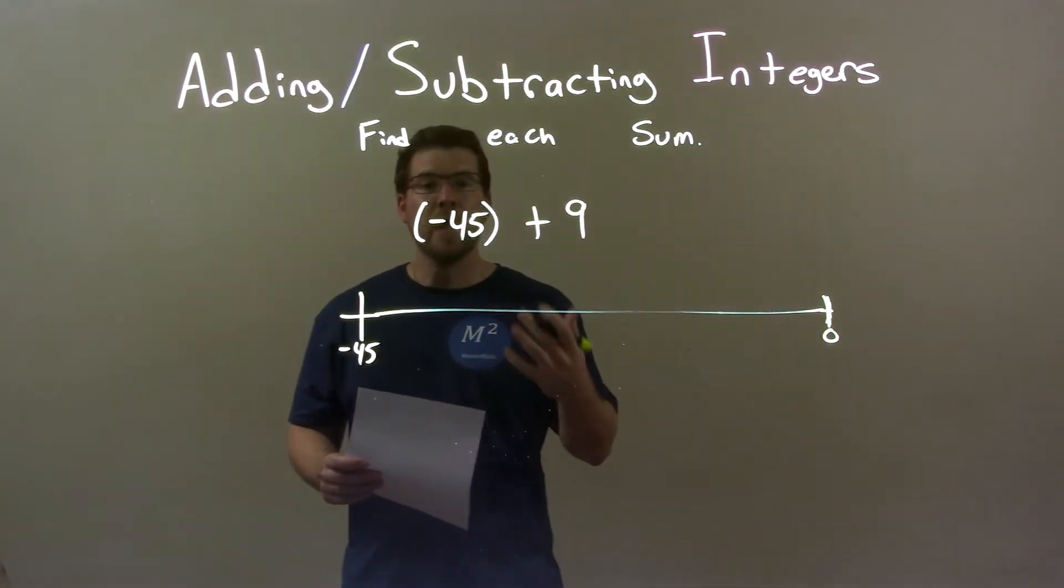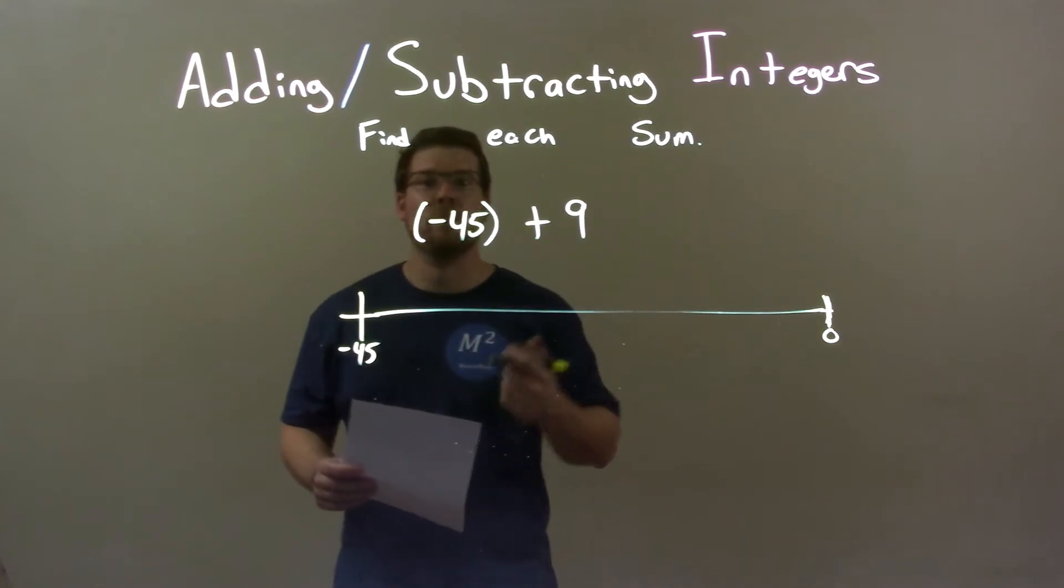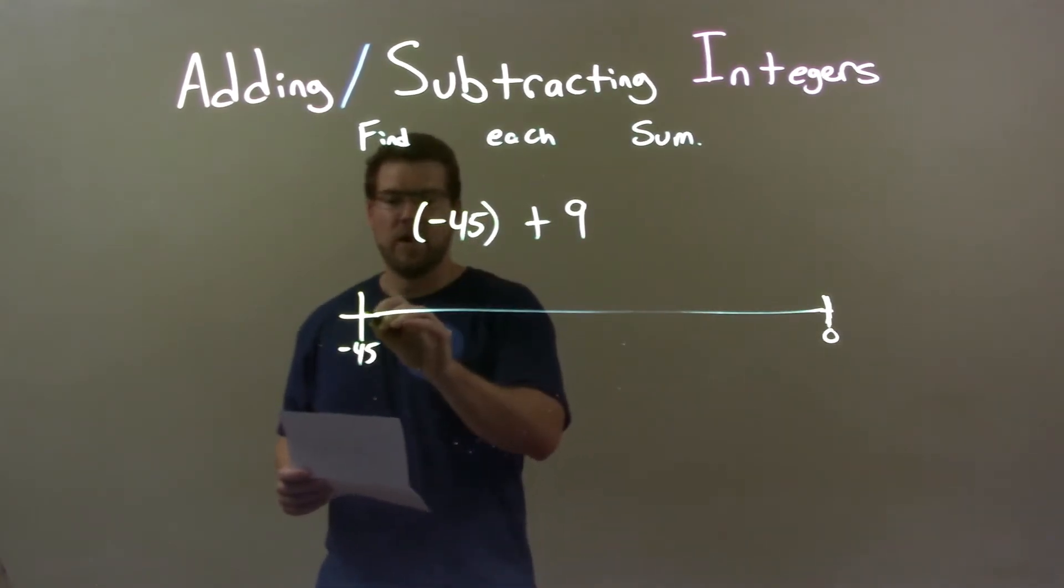Well, we have to add 9 units. 9 we know we can break down to 5 and 4. So if we add, let's say, plus 5, plus 5 right here, plus 5, that gets me to negative 40.